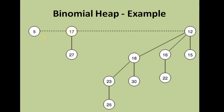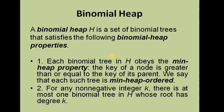The min heap property is also followed: 5 is smallest in B0; 17 is smaller than 27 in B1; 12 is smaller than 18, 16, and 15 in B3; 18 is smaller than 23, 30, and 25; and 16 is smaller than 20. As we move down the tree we encounter larger elements, satisfying the min heap ordering.